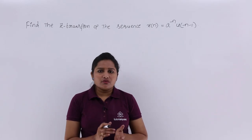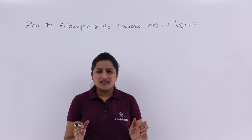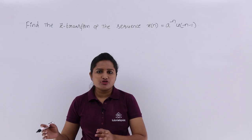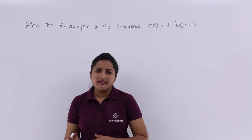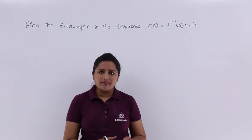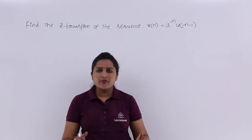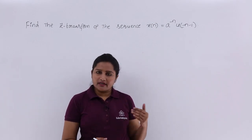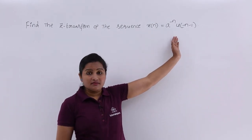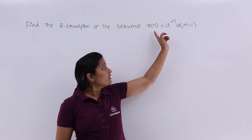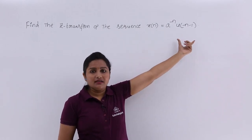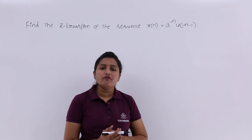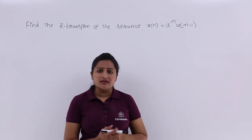In the previous model, you dealt with sequences with samples like x of n equal to 5, 2, 3, 1, and so on. If you are given samples like that, you have a procedure of just substitution. But here they have given a signal description: a power minus n into u of minus n minus 1 is the signal.